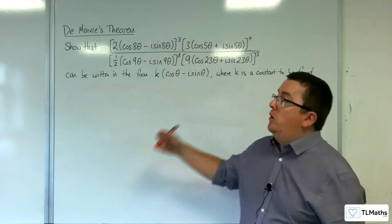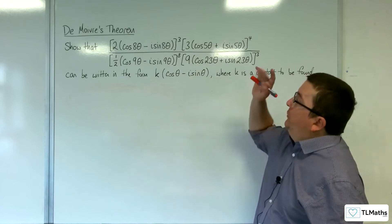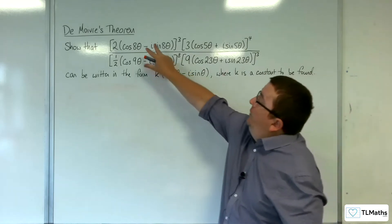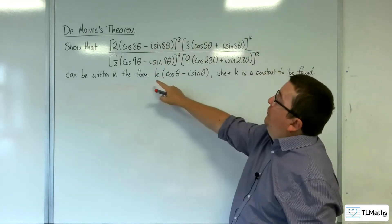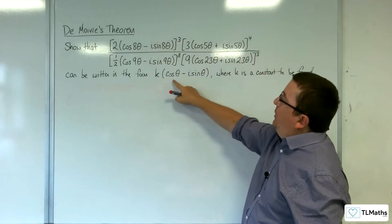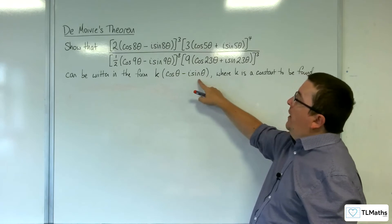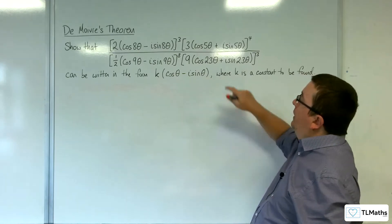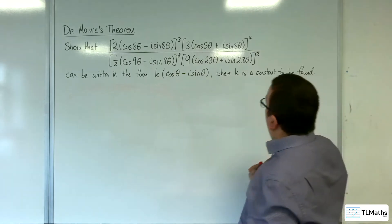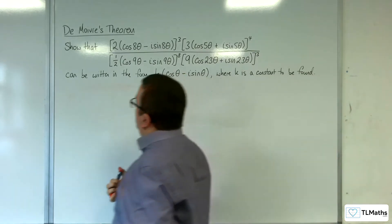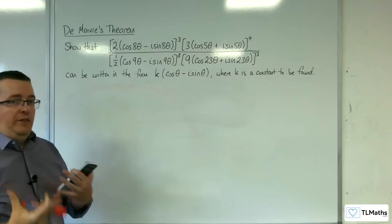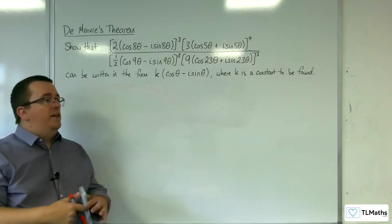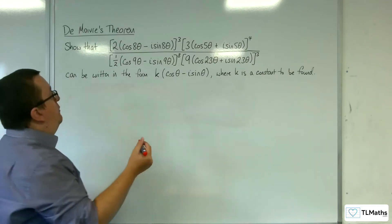In this video, we're going to use De Moivre's Theorem to show that this expression can be written in the form k times cosine theta take away i sine theta, where k is a constant to be found. So there's a bit of indices knowledge with De Moivre's Theorem in here as well.